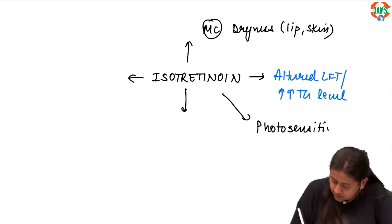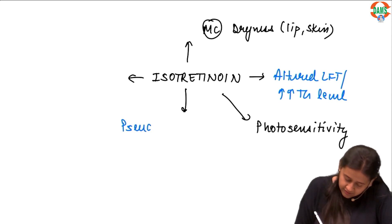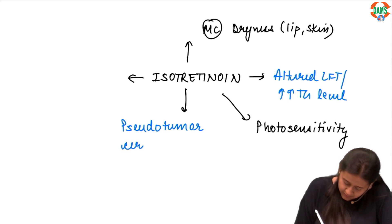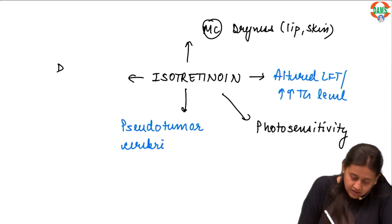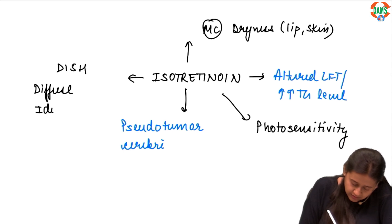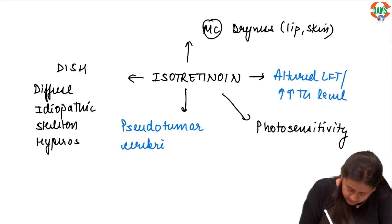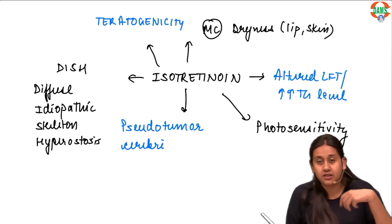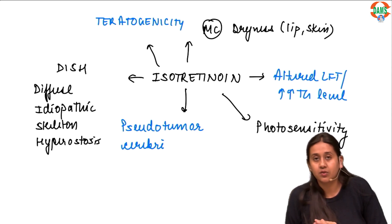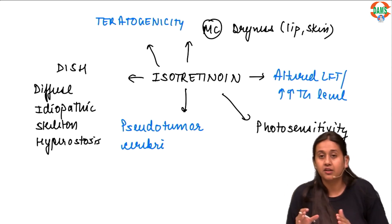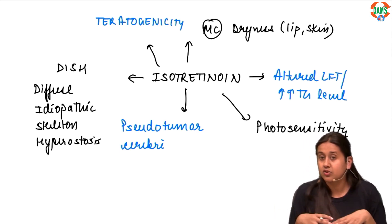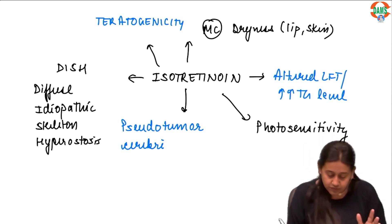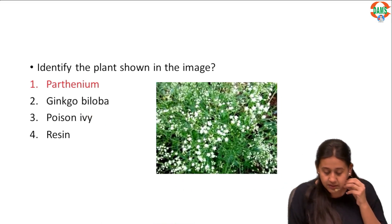Photosensitivity — you should not take isotretinoin when exposed to sun. The next side effect is pseudotumor cerebri, which is a space-occupying lesion that develops in these individuals. Another side effect is diffuse idiopathic skeletal hyperostosis (DISH). The last but very important side effect is teratogenicity, and that is why we never give isotretinoin to a reproductive-age female who is trying for pregnancy. If someone is already taking isotretinoin and wants to get pregnant, we ask them not to conceive for another one to three months, as isotretinoin remains in the body for around one to three months after stopping the drug.